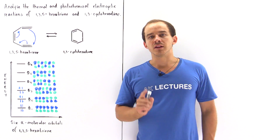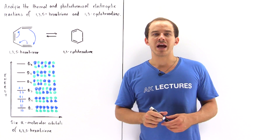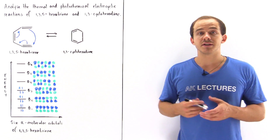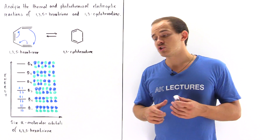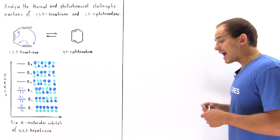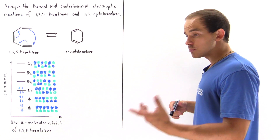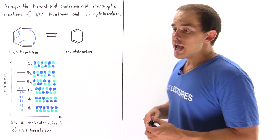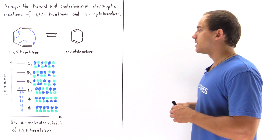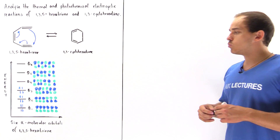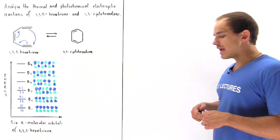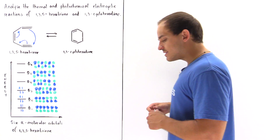Not all thermal electrocyclic reactions take place in the con-rotatory fashion. Some electrocyclic reactions under thermal conditions take place via the dis-rotatory fashion. So to see what we mean, let's take a look at the following example.